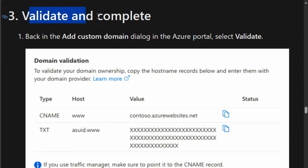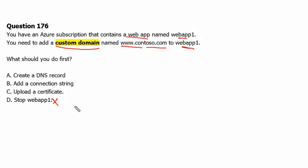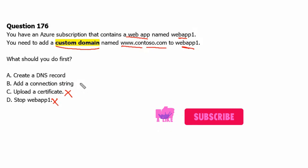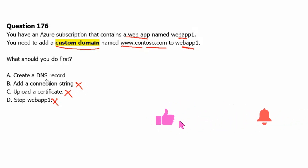Finally, we will validate the ownership of the domain and complete. Going back to the question: stopping the web app will not help in adding the custom domain. Option C — upload a certificate — is related to installing SSL, not adding a custom domain. Option B — add a connection string — is for connecting with a database. Option A — create a DNS record — is the correct answer.